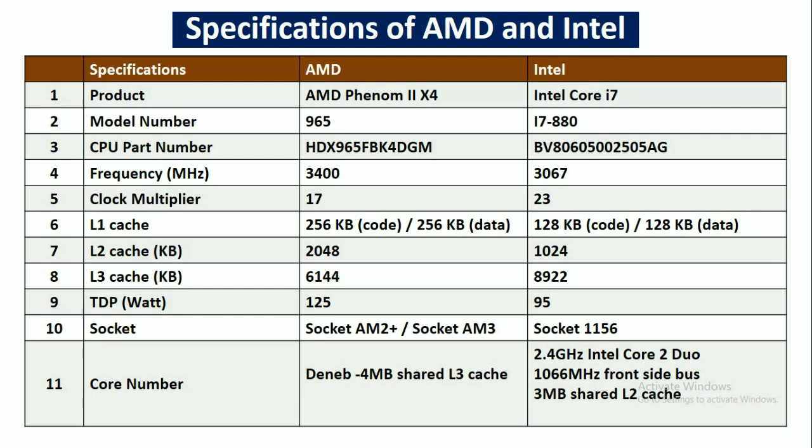The model number for AMD is 965, and for Intel it is i7-880. The CPU part number for AMD processor is HDX965FBK4DGM, and for Intel it is BV8060-500250-5AG.